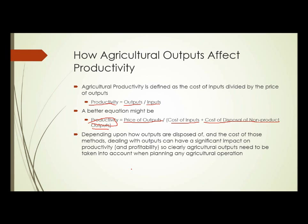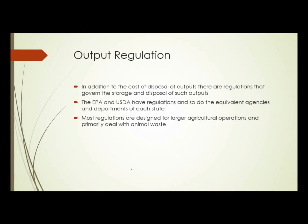Depending on how the outputs are disposed of and the cost of those methods, dealing with outputs can have a significant impact on productivity and profitability. So we need to take those outputs into account when planning any agricultural operation. In addition to the cost of disposal, there are regulations that govern the storage and disposal of such outputs, and those regulations may mean that you need a special facility, which is an additional cost. The EPA and USDA have regulations about these things, and so do the equivalent agencies in each state.